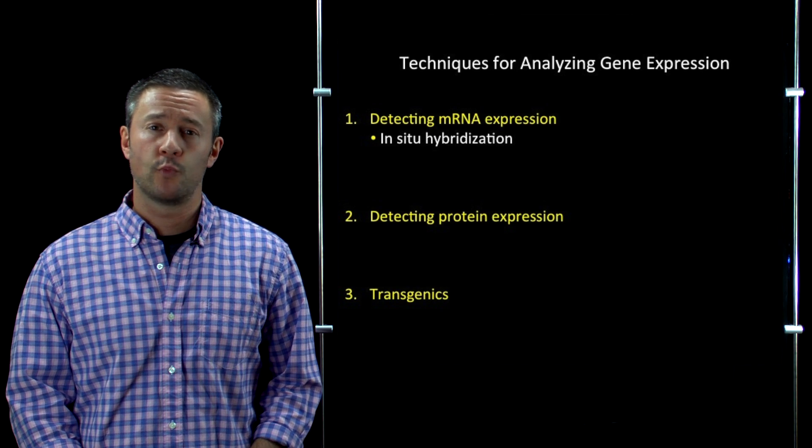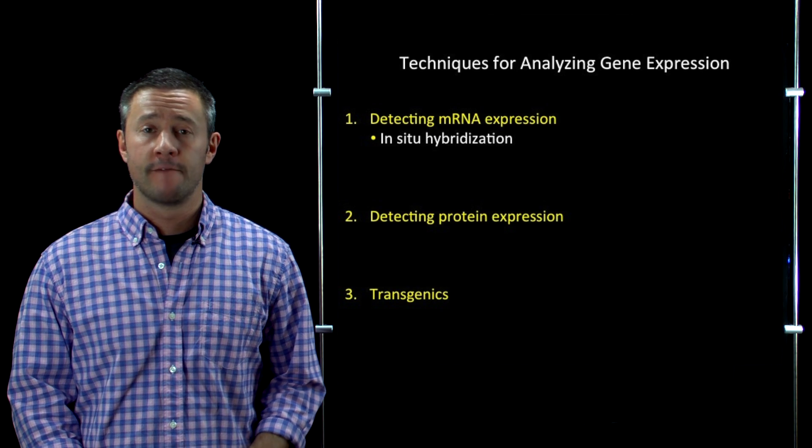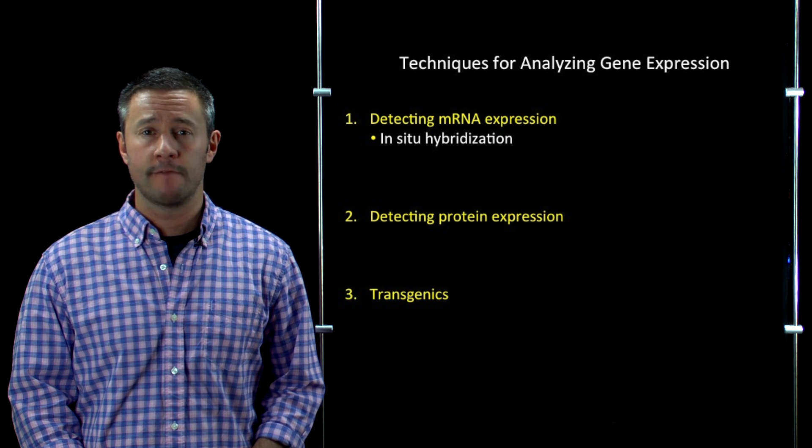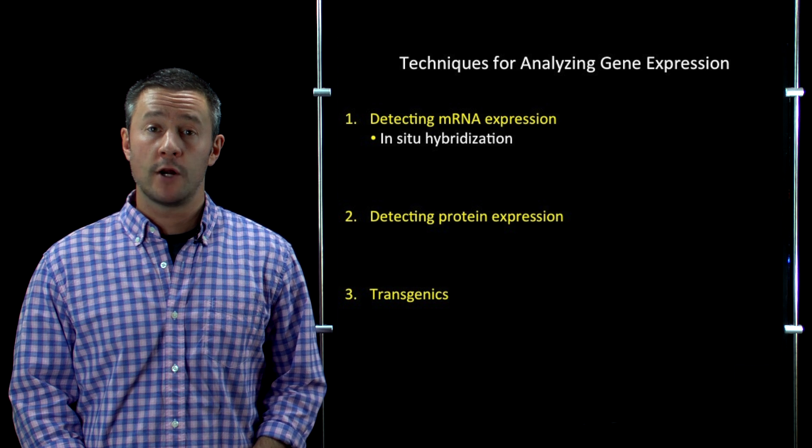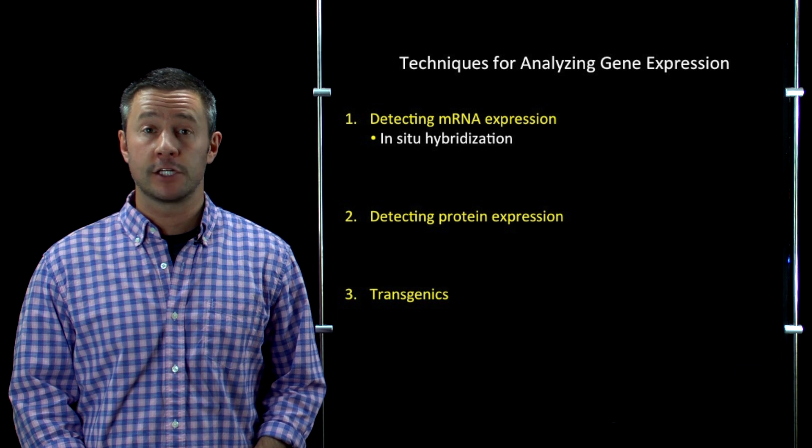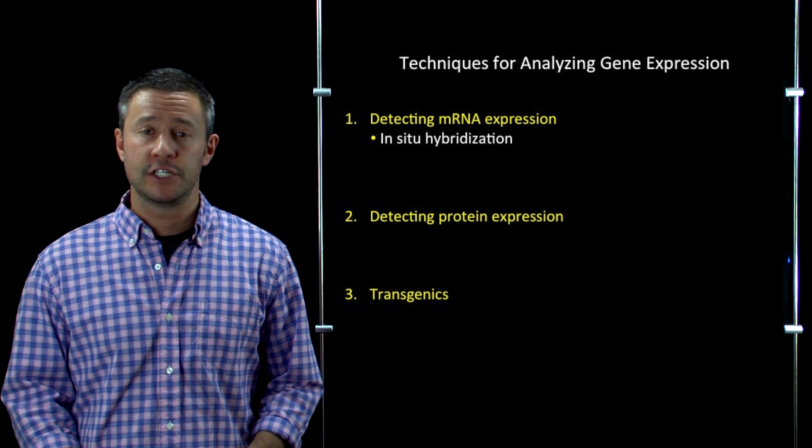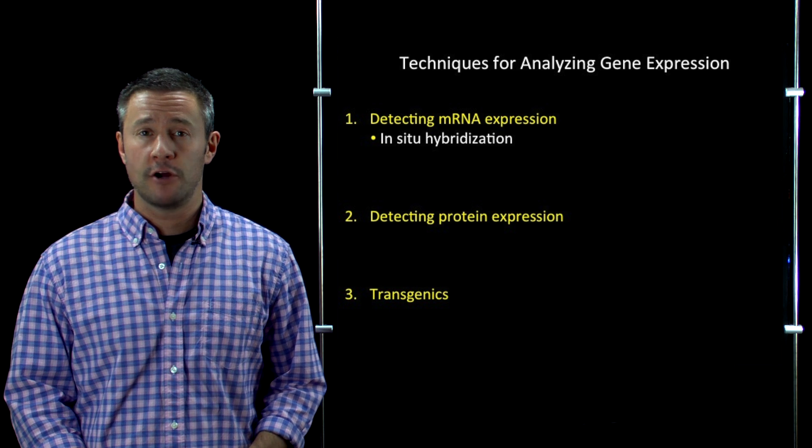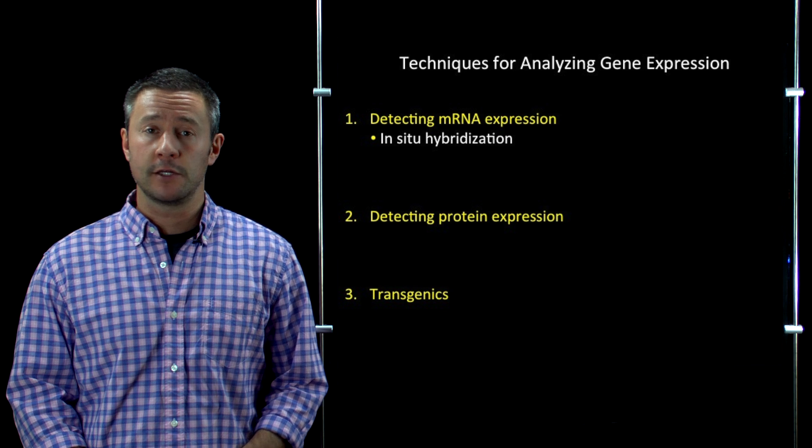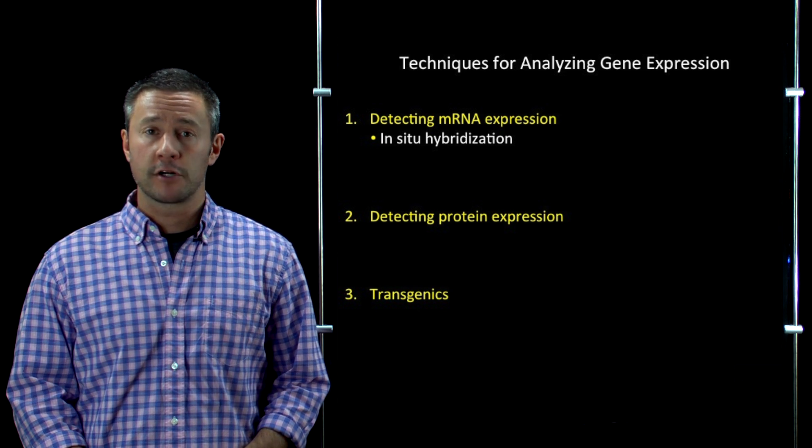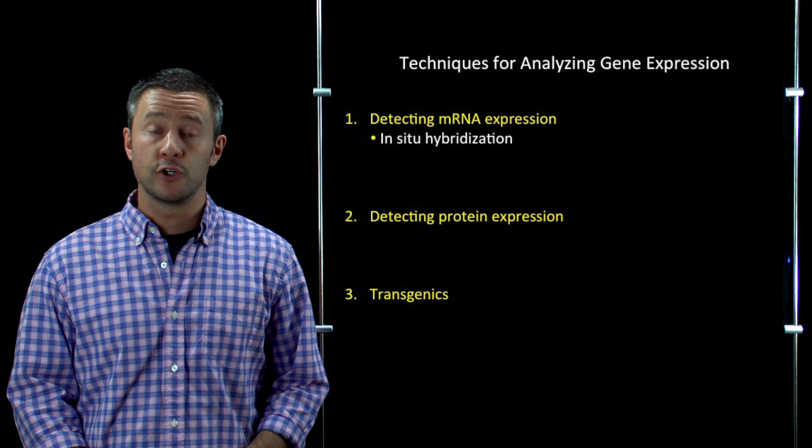So in situ hybridization will reveal the expression pattern for a particular messenger RNA of interest. But sometimes there are situations where you want to obtain a snapshot of the expression levels for many different genes, perhaps all the genes in the genome, either at a particular stage of development or in a particular tissue. And there are a couple of widely used approaches for doing that.